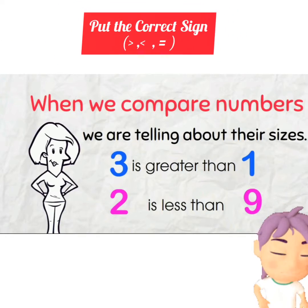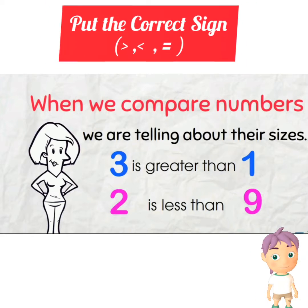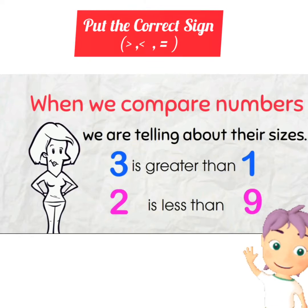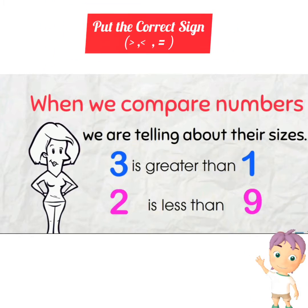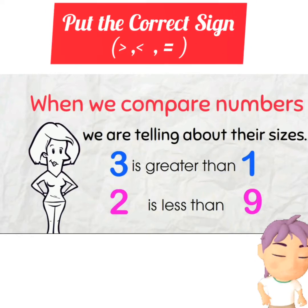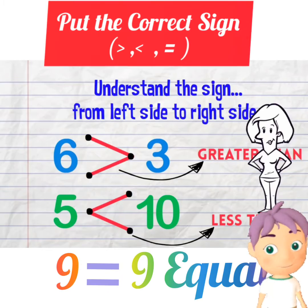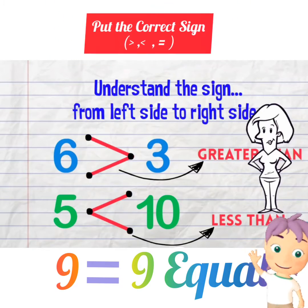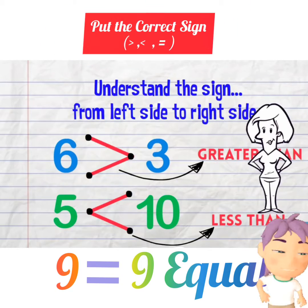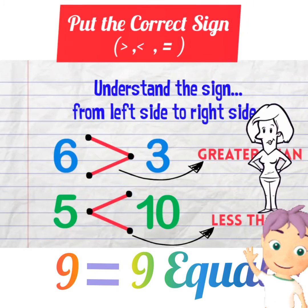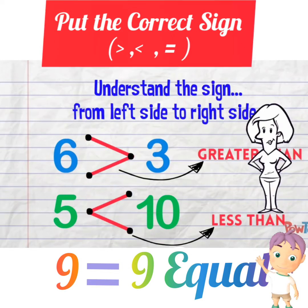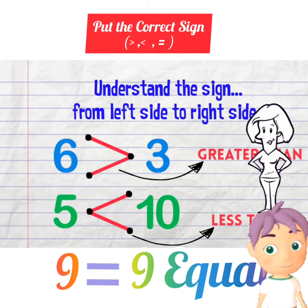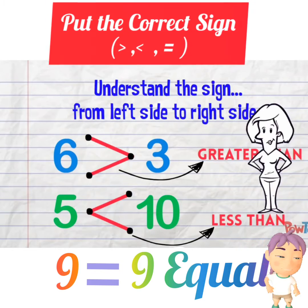When we compare numbers, we are telling about their sizes. Like three is greater than one, two is less than nine. Greater means bada — six is greater than three. Less means chota — five is less than ten. Equal to means same — nine is equal to nine.